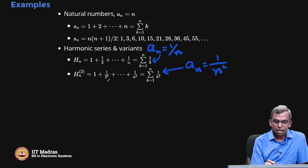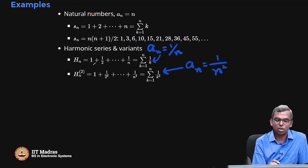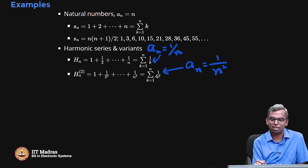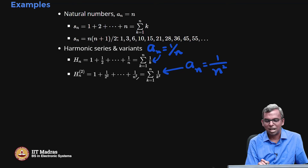Look at the next modification. Instead of a_n equals 1/n, I start with a_n equals 1/n². I denote it as H_n^(2) to indicate that instead of the usual harmonic series, we raise everything to the power 2. So it is 1 plus 1/2² plus 1/3² plus ... plus 1/n², and notice the succinct notation: summation over k of 1/k². Notice how clean this notation is and why it is useful — good notation makes your life much simpler.